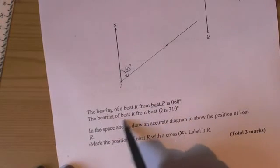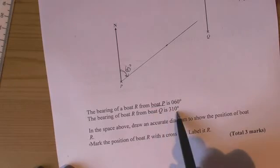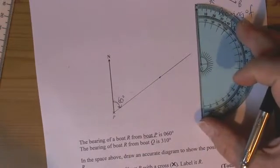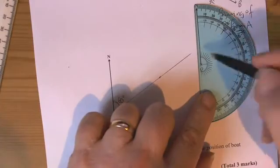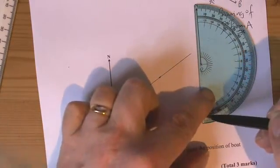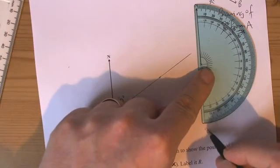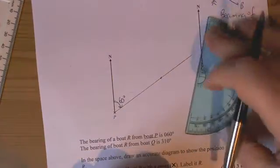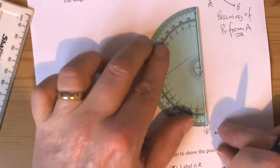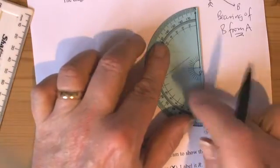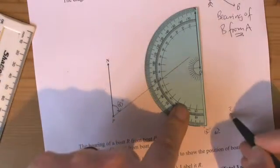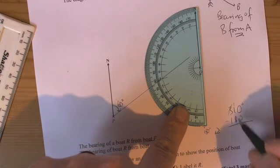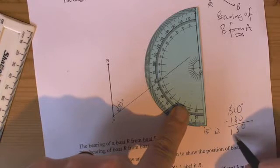It then tells me in the question that the boat is also on a bearing of 310 degrees from Q. So now I've got to put my protractor at Q. I line up 0 again with the north line, but I notice that I can only measure 180 degrees with this protractor, but I do know that's 180 coming in a clockwise direction to that point. So if I turn my protractor around, then line up the 180 point I measured, then I know that to get to 310, then I have to do 310 take away 180.